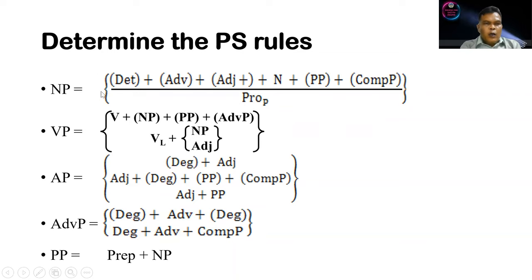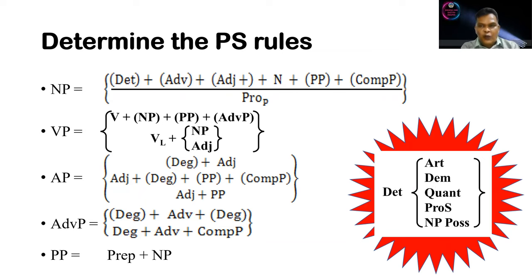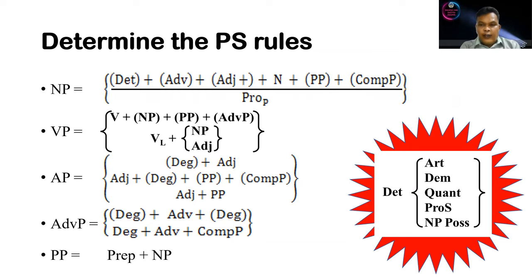We have to know that determiners in English are of five kinds. The first one is article. The second one is demonstratives — this and that, or these and those for plural. We also have quantifier, such as many, some, few, and so on. We also have possessive pronoun, and the last one is possessive noun or possessive noun phrase. These are the elements of determiners in English.